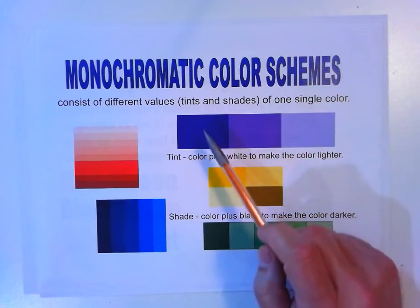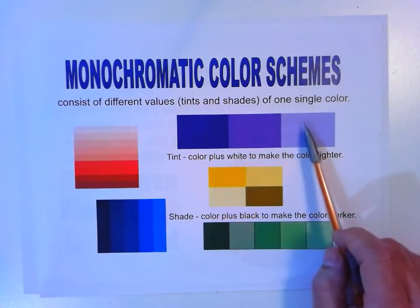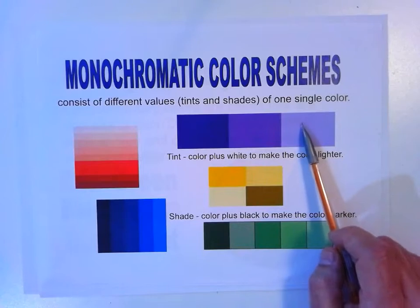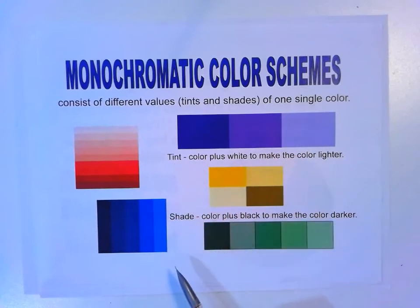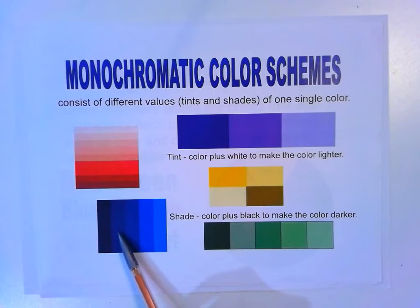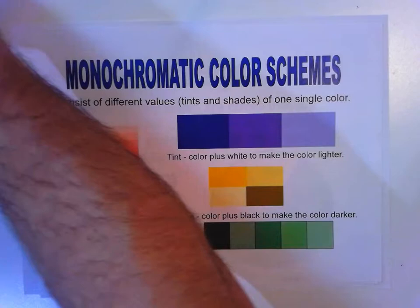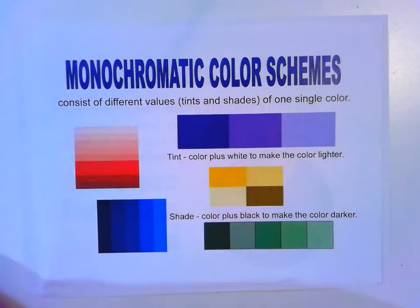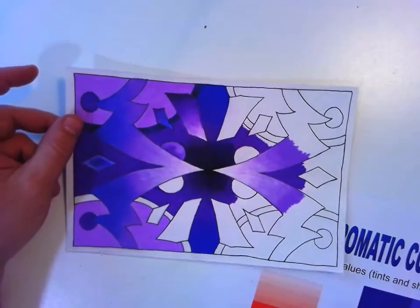We can see here this is purple and it keeps getting lighter and lighter. As you add white to a color, that is a tint. Anytime that you add black to a color, you make a shade. So this is a shade of blue. I also have an example of a monochromatic abstract design.